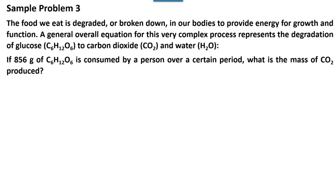Hi everyone, it's me again. This is Part 2 of our video lesson about calculating or solving stoichiometry problems. We have here the given problem: the food we ate is degraded or broken down in our bodies to provide energy for growth and function. The general overall equation represents the degradation of glucose, C6H12O6, to carbon dioxide and water. If 856 grams of glucose is consumed by a person over a certain period, what is the mass of carbon dioxide produced?